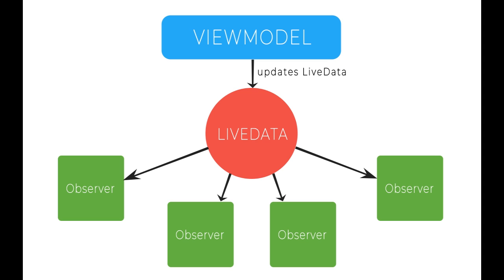A good rule of thumb I like to use is to keep all of the if statements and code logic — switch statements, loops — out of the observers and only put them into the view models. This is just a rule of thumb; obviously there will be different cases where you need to put if statements in your activities. But generally my goal is to keep all of the business logic away from the views.